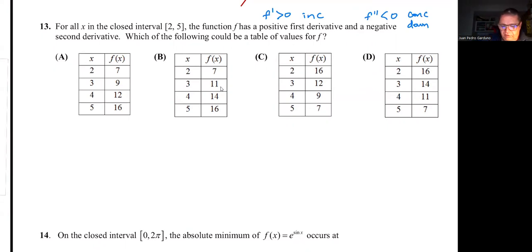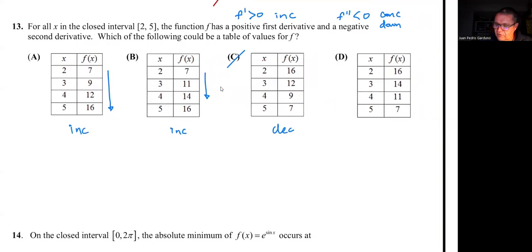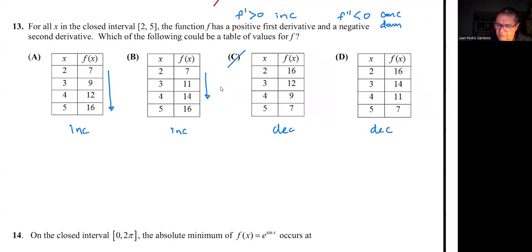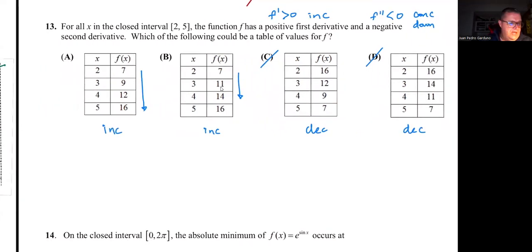Let's first check which of these are increasing or decreasing. Table A, we see that the function is increasing. As x increases, y increases. So this one's increasing. Then this next one is also increasing. This one goes, the y values go from 16 to 7. So this one is decreasing. So that's not it. And then the last one is also decreasing. So that is not it.